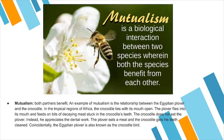Mutualism is the relationship where both partners benefit. An example of mutualism is the relationship between the Egyptian plover and the crocodile. In the tropical regions of Africa, the crocodile lies with its mouth open. The plover flies into its mouth and feeds on bits of decaying food stuck in the crocodile's teeth. The crocodile does not eat the plover — instead, he appreciates the dental work. The plover eats a meal, and the crocodile gets his teeth cleaned. The Egyptian plover is also known as the crocodile bird. This is the same interaction between bees and flowers: the bees receive the nectar, and the flowers get pollinated.